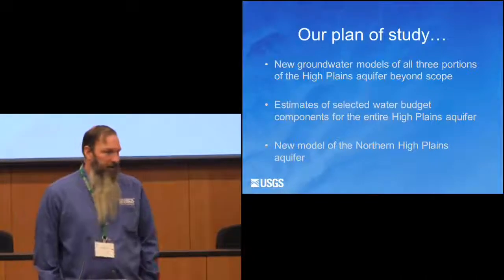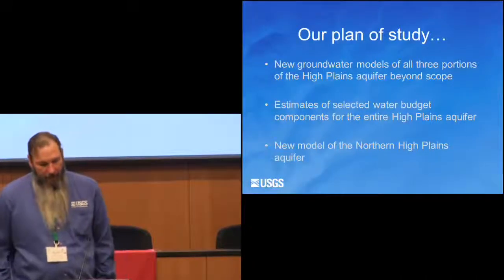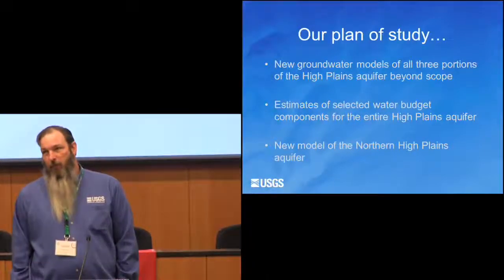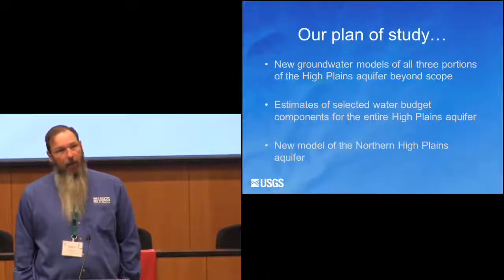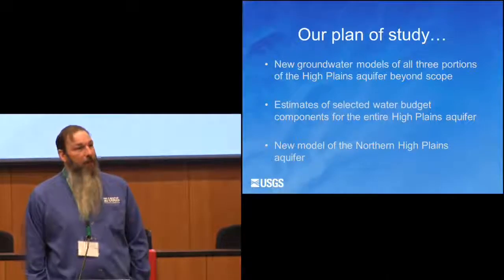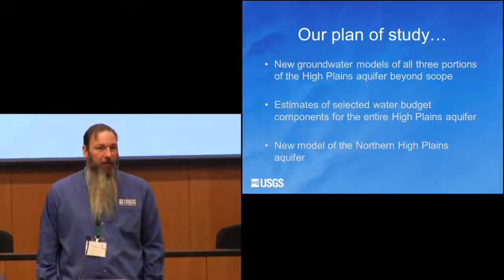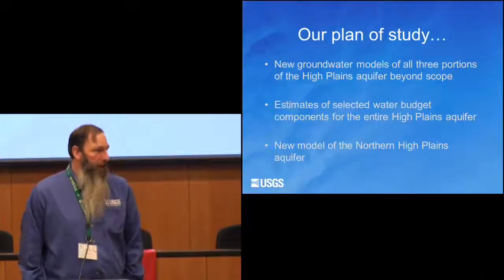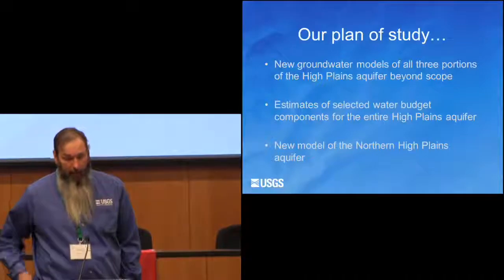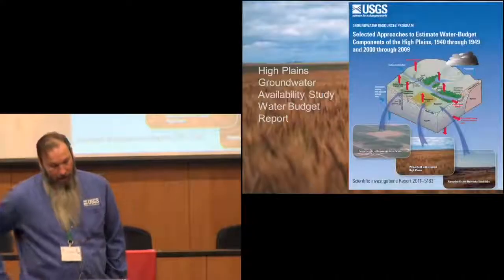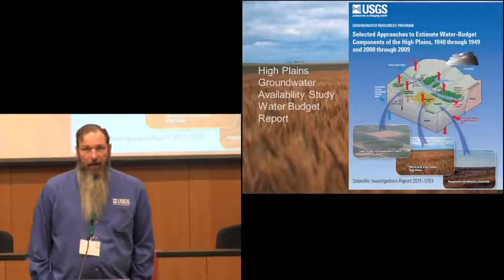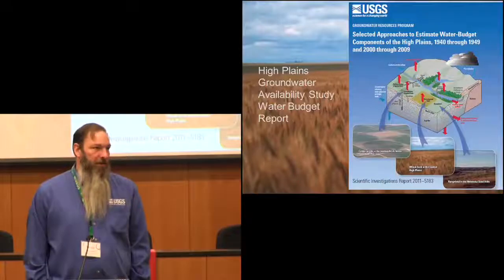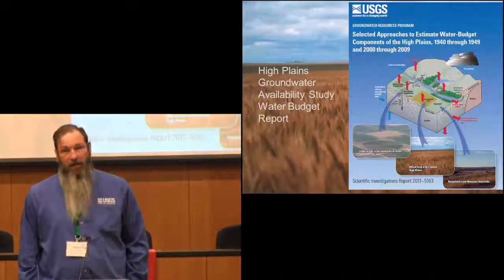Our plan of study — within the time and resources available to complete the study, we could not complete new models of all portions of the aquifer. So we selected the northern high plains aquifer to build a new groundwater flow model, and then we provided estimates of selected water budget components for the entire high plains aquifer. This is just a cover shot of the first report that came out of the study.